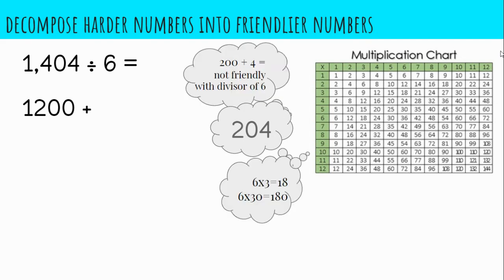You may be tempted to use expanded form and say 200 plus 4. However, 200 is not a multiple of 6, and neither is 4, so those would not work.